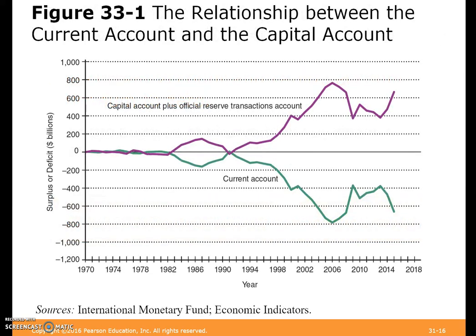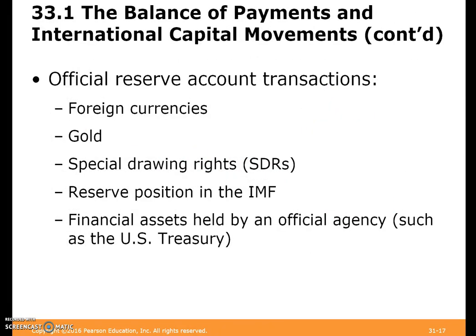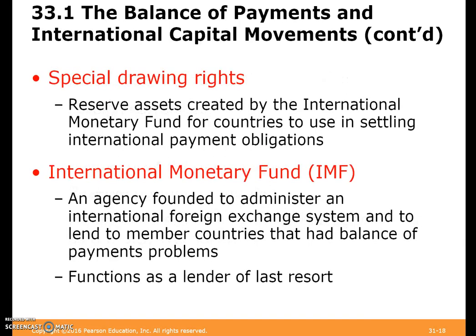Here's a graph of the current account and capital account over time. Official reserve account transactions include transactions of foreign currencies, gold, special drawing rights, reserve positions in the IMF, and financial assets held by offices like the Treasury. Special drawing rights are reserve assets created by the IMF for countries to use in settling international payment obligations. The IMF — the International Monetary Fund — is an agency founded to administer an international foreign exchange system and to lend to member countries with balance of payment problems, functioning as an international lender of last resort.